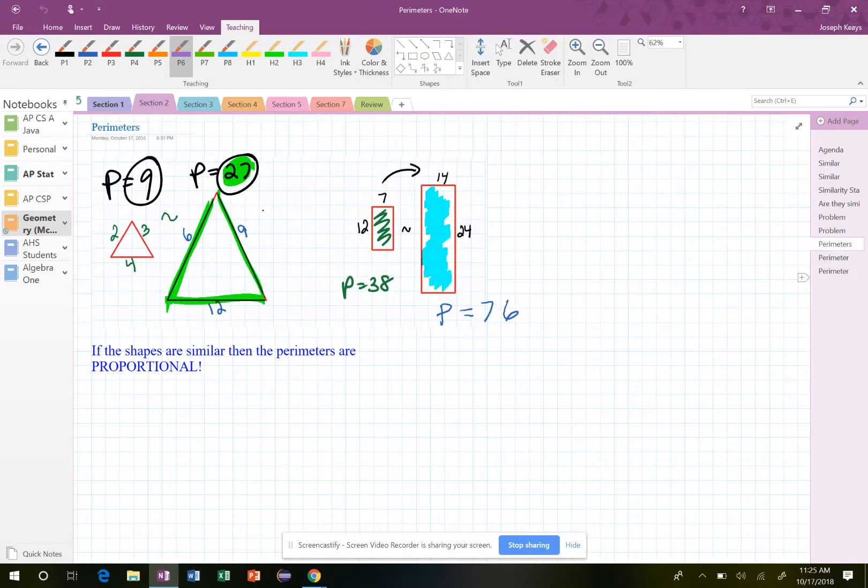So this is a really cool characteristic when we start to analyze similar polygons and their perimeters. Well, notice we have a shape on the left in here, a real simple one, a 2, 3, 4.